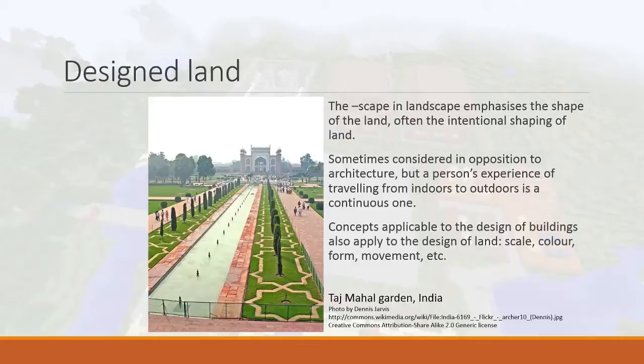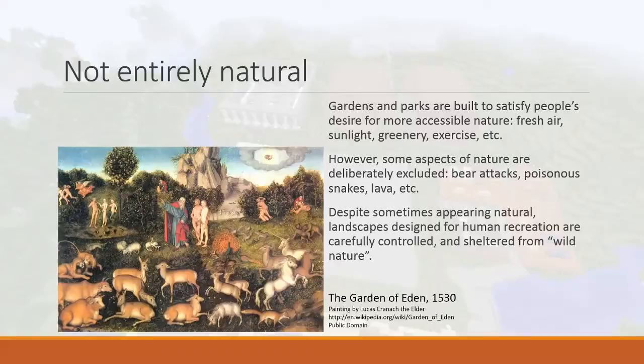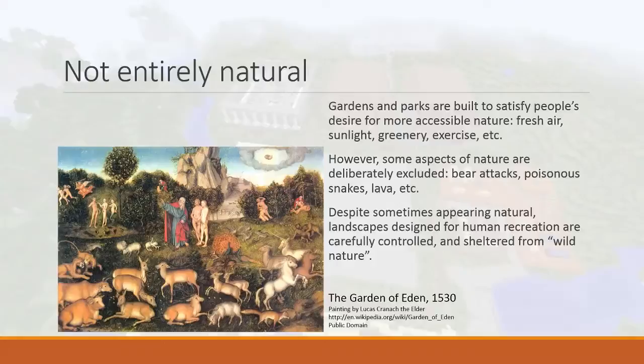Most design concepts apply to both landscapes and buildings. Landscaping, especially gardens, is not entirely natural. This picture is an illustration of the Garden of Eden — what somebody imagines it to be. Gardens and parks are built to satisfy people's desire for more accessible nature: things like fresh air, sunlight, greenery, exercise, maybe animals. When you go to a garden, you want plants and flowers, maybe sunshine.